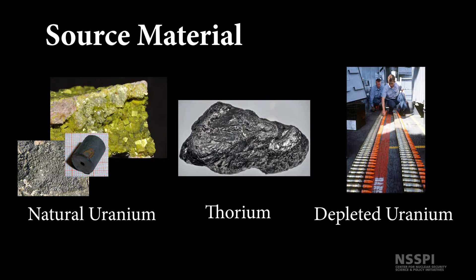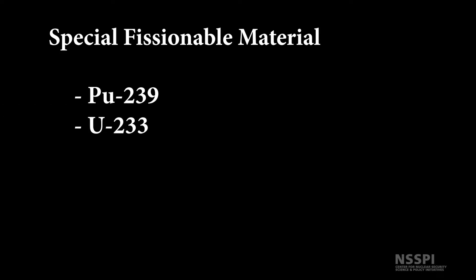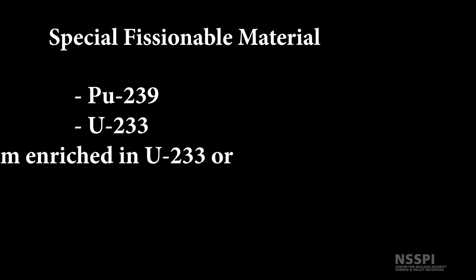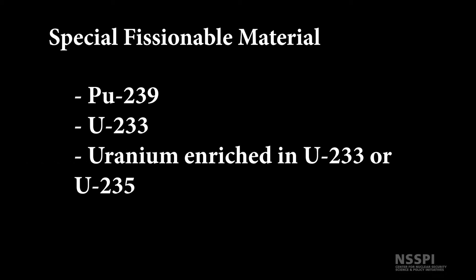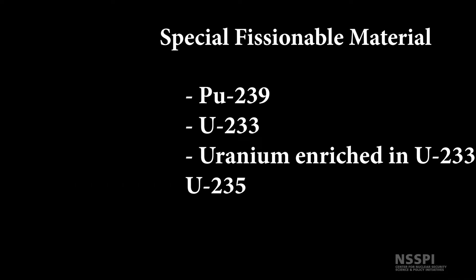Source material does apply to ore concentrates. Special fissionable material is plutonium-239, uranium-233, uranium enriched in the isotopes 235 or 233, and any material containing one or more of these. The term special fissionable material does not include source material.